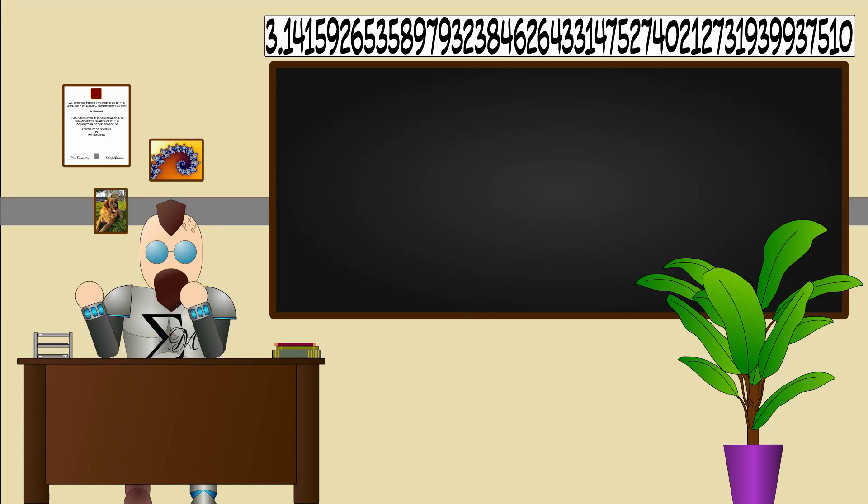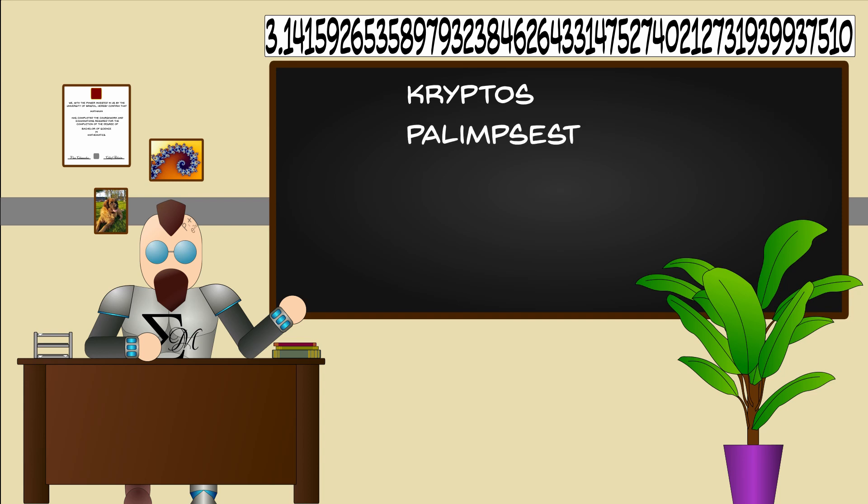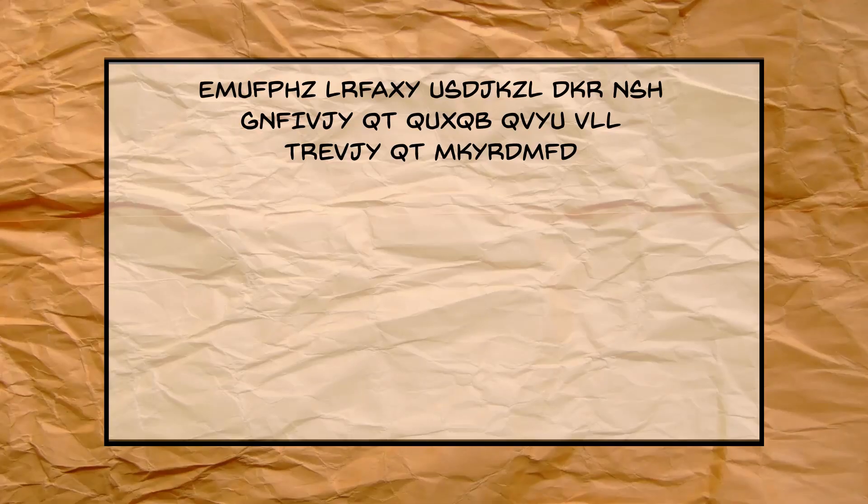For the first ciphertext the vigenere cipher was used. But instead of using one keyword the artist used two. First encrypting the message with the code word Kryptos. And then using the keyword palimpsest which is a writing material such as parchment or tablet used one or more times after earlier writing has been erased. Doing this turns this into this.